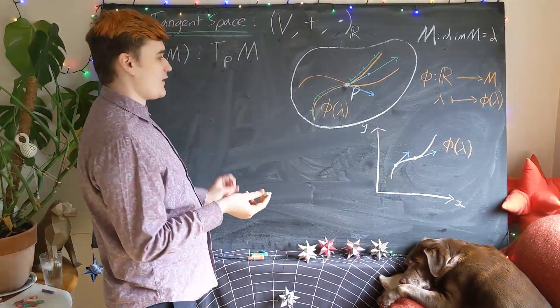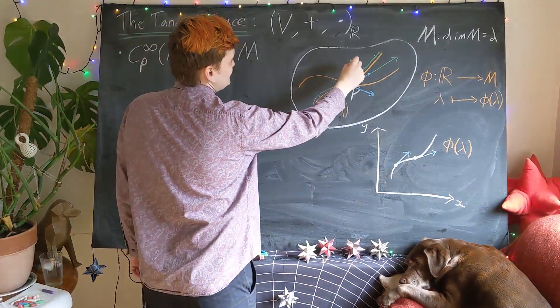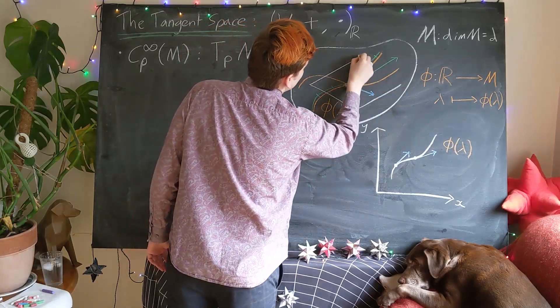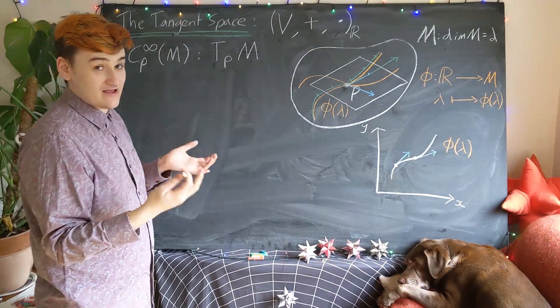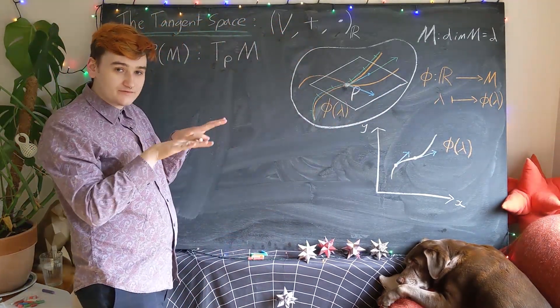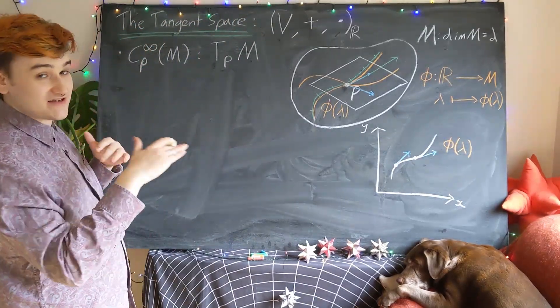So really the best way now to kind of visualize things is of visualizing the tangent space as some kind of tangent plane, or tangent three-dimensional space, whatever it is, to the point that you're thinking about. And then all of your tangent vectors are going to live inside this tangent plane or tangent space.